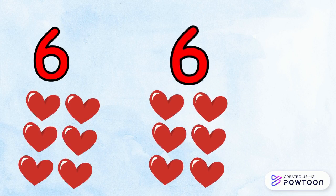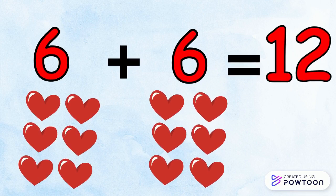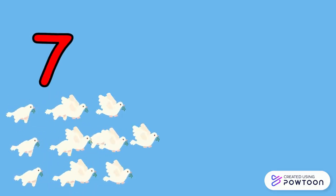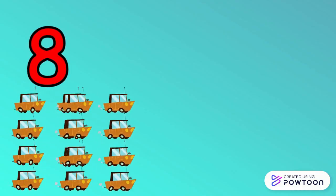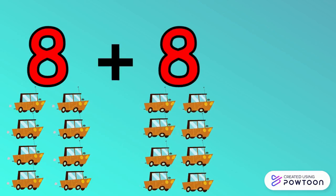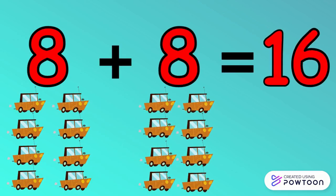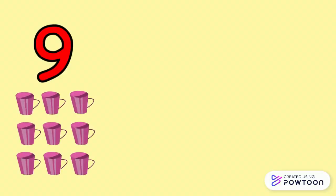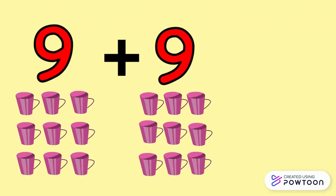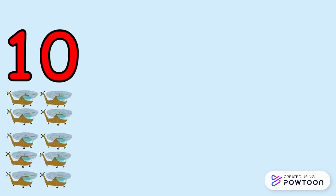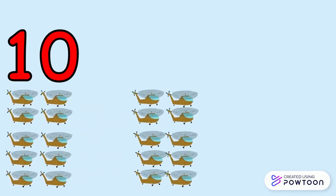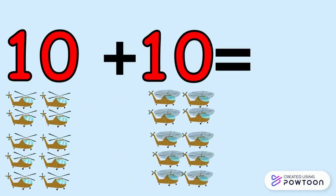The double of 6 is 12 — 6 plus 6 equals 12. The double of 7 is 14 — 7 plus 7 equals 14. The double of 8 is 16 — 8 plus 8 equals 16. The double of 9 is 18 — 9 plus 9 equals 18. The double of 10 is 20 — 10 plus 10 equals 20.